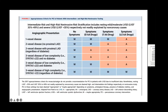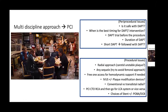Kalau kita melihat dari jurnal ini, triple vessel high complexity syntax sudah lebih dari 22, di sini masih bisa dipertimbangkan untuk PCI — tulisannya 'M' untuk semua subpopulasinya, dalam arti 'maybe appropriate' untuk dilakukan PCI. Jadi sebenarnya PCI, selain CABG untuk revaskularisasinya, bisa dipertimbangkan untuk pasien ini.